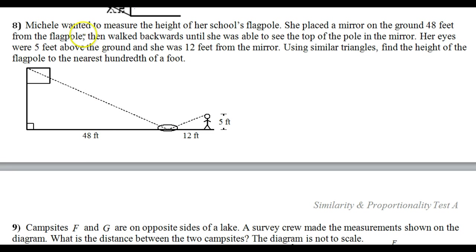Number 8. Michelle wanted to measure the height of her school's flagpole. She placed a mirror on the ground, 48 feet from the flagpole. Then walked backwards until she was able to see the top of the pole in the mirror. Her eyes were 5 feet above the ground, and she was 12 feet from the mirror. Using similar triangles, find the height of the flagpole to the nearest hundredth of a foot. That's two decimal places.